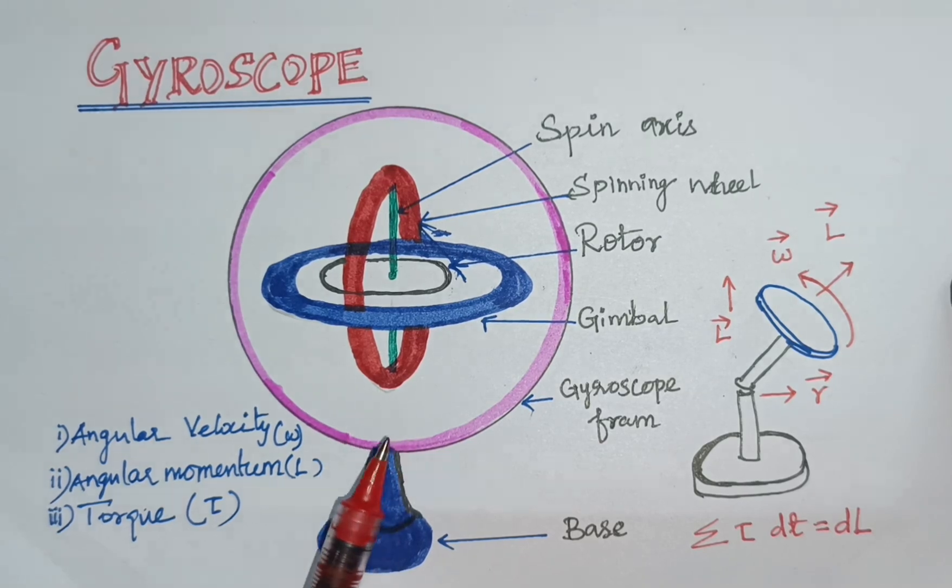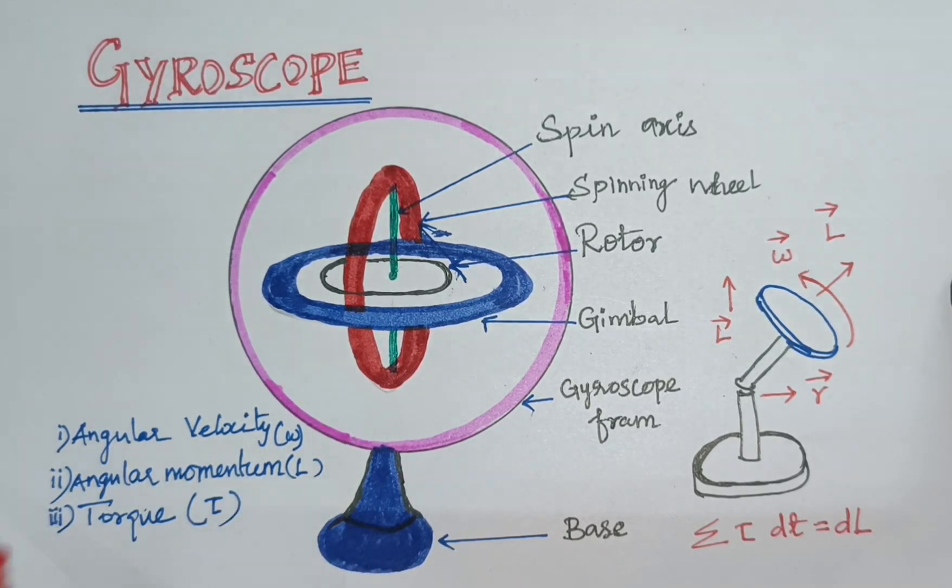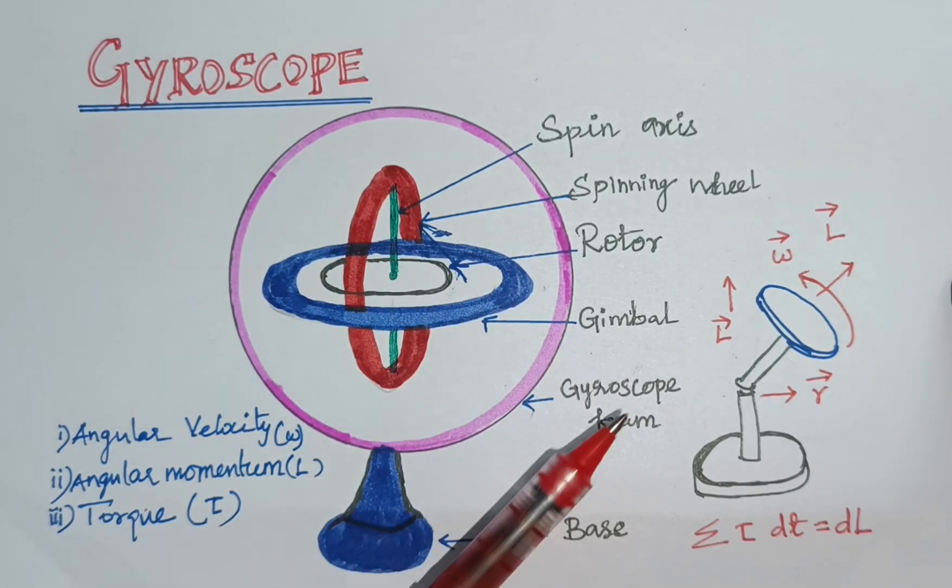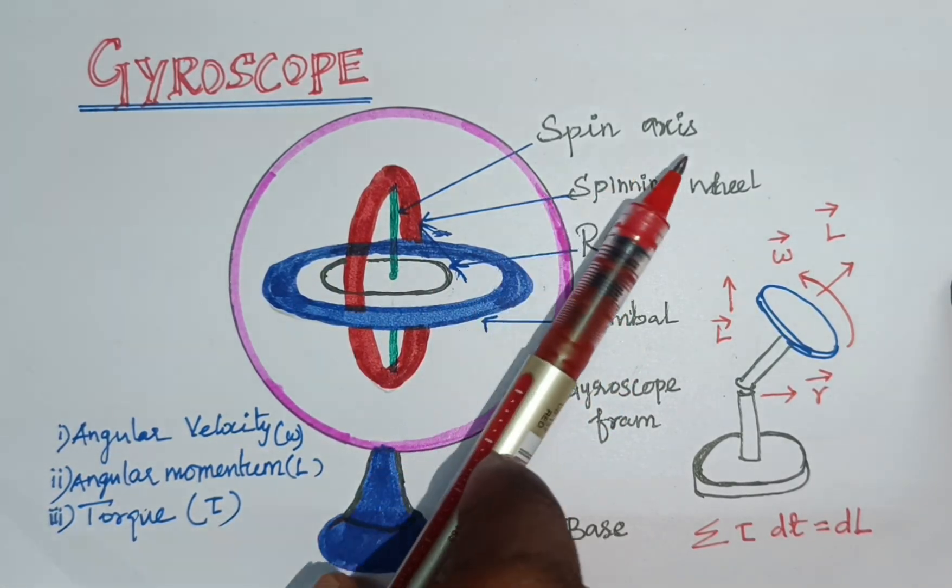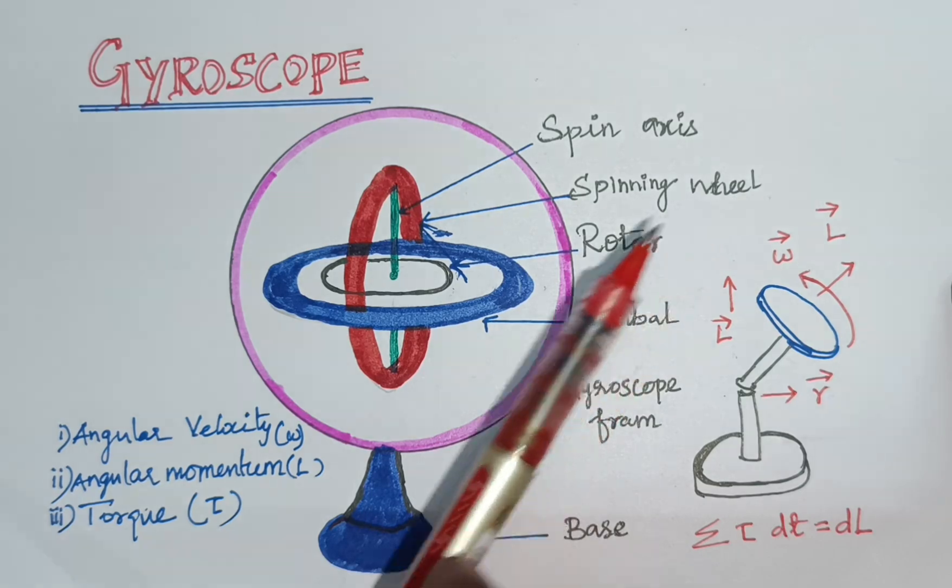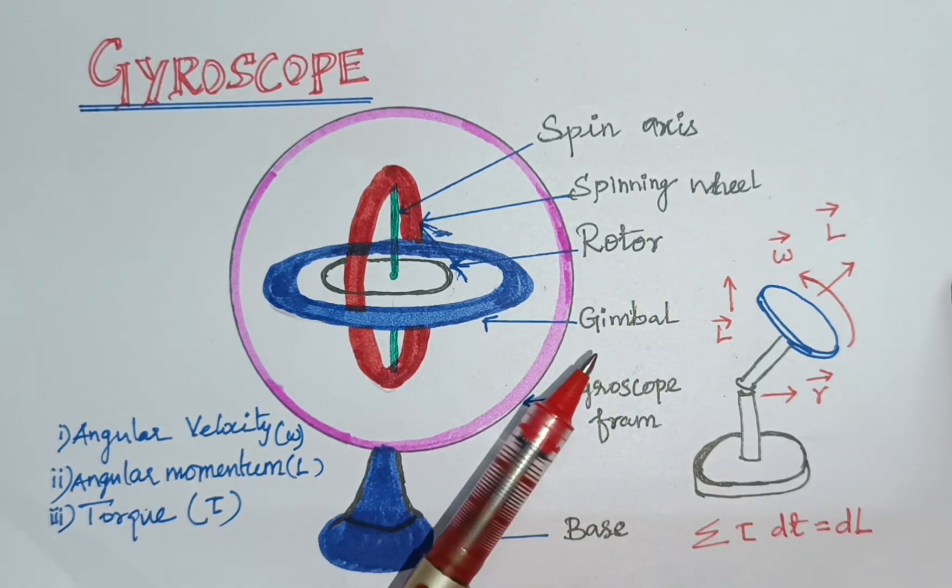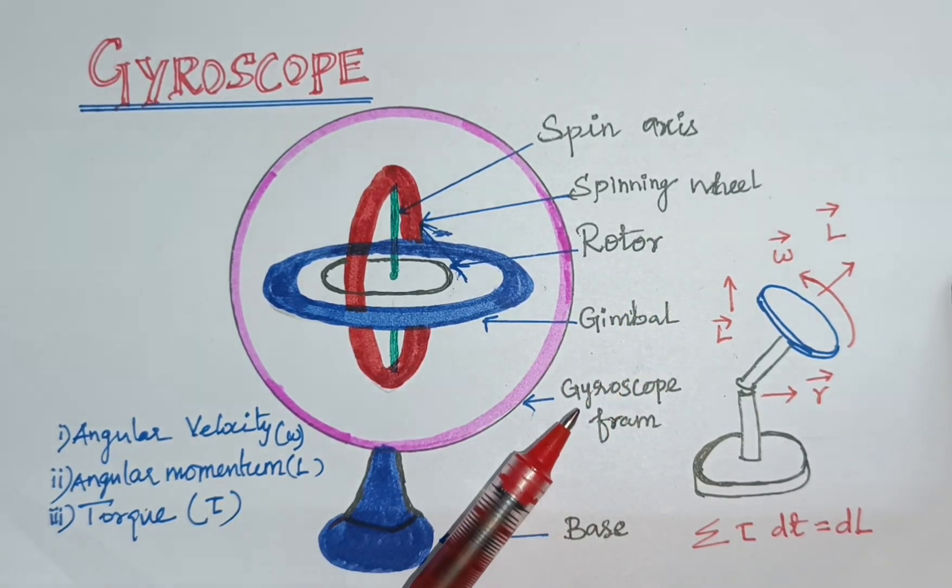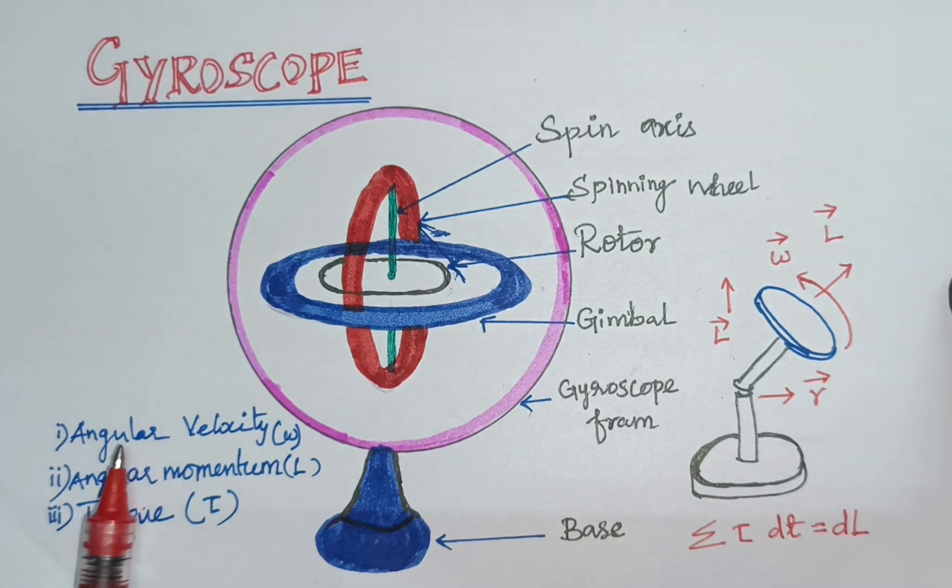This is mechanical gyroscope. There are major five parts: spin axis, spinning wheel, rotor, gimbal, and gyroscope frame.